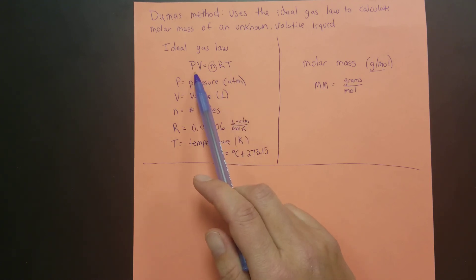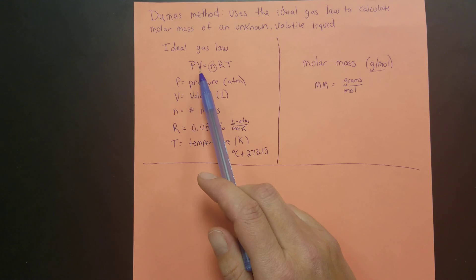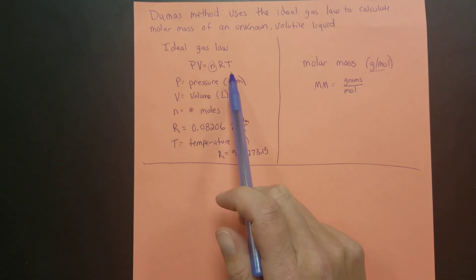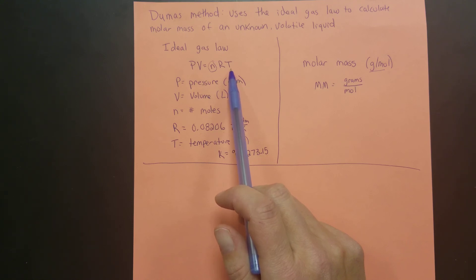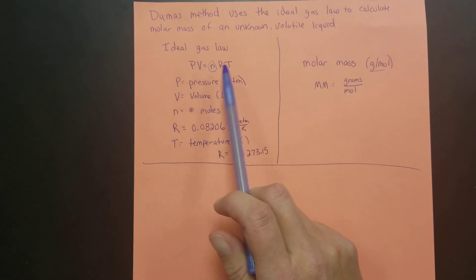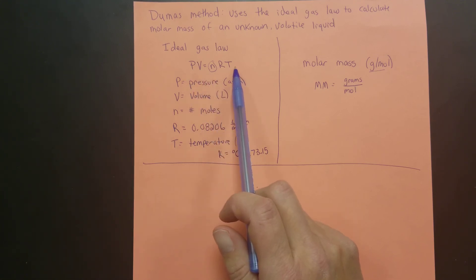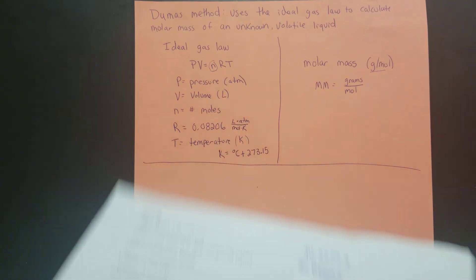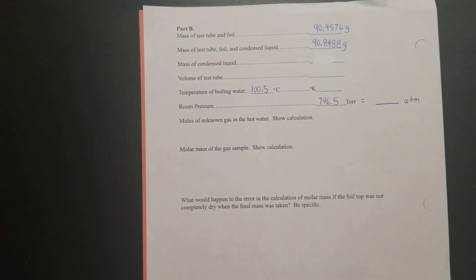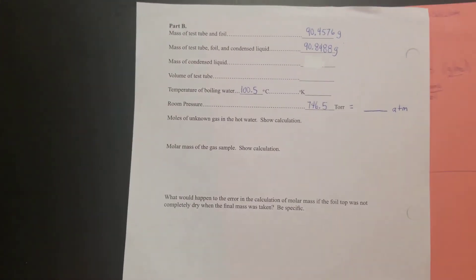The pressure will come from a barometer in class. The volume can be measured with a graduated cylinder. The R value is constant and already given to us. The temperature is going to be the temperature of the hot water bath used in the experiment. I'm going to go through with the values given in the data collection video and show you how to use them to find the molar mass.